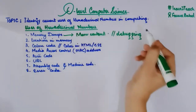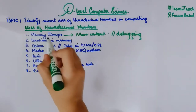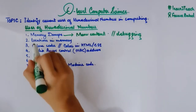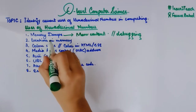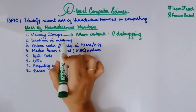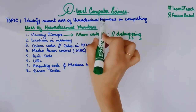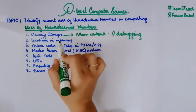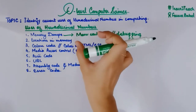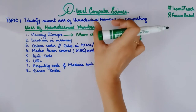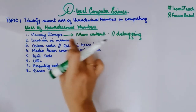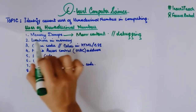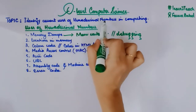Memory dumps are basically in the form of hexadecimal numbers, and in the detailed video I will discuss this further. Moving towards locations in memory — memory locations are also displayed in the form of hexadecimal numbers because it is easier to display in hexadecimal form than in binary. It takes lesser space and lesser display screen, so that's why we use hexadecimal number system to represent the location of memory.